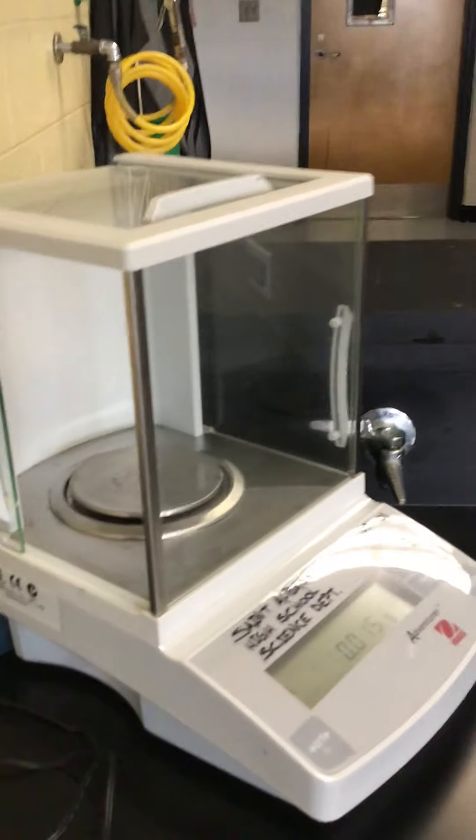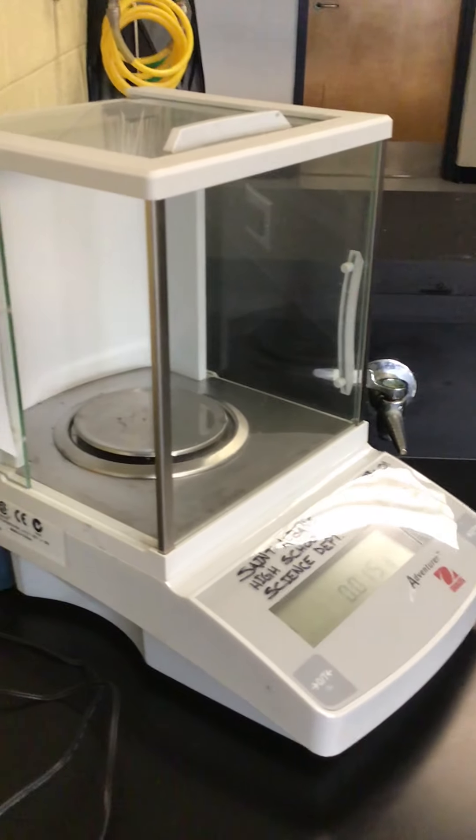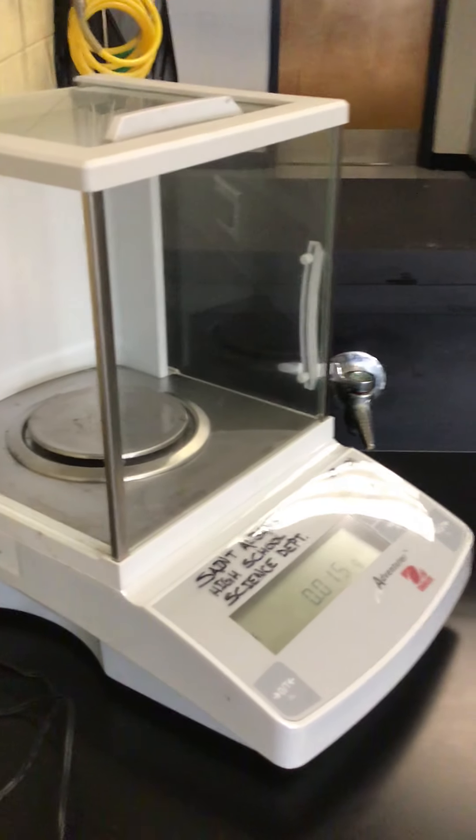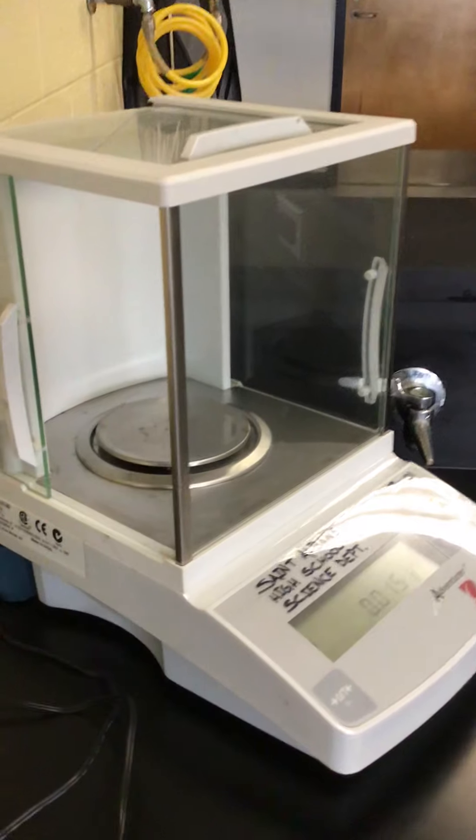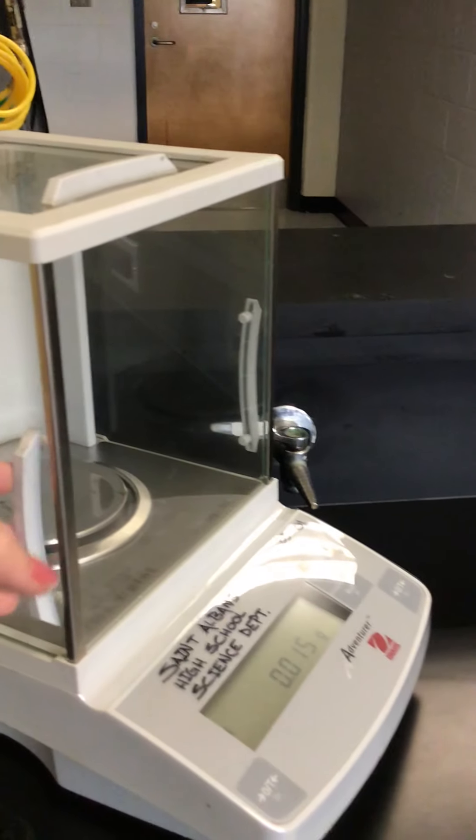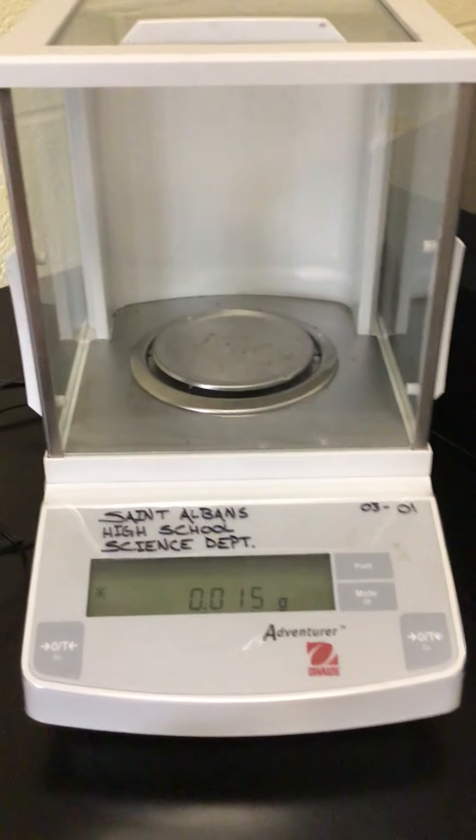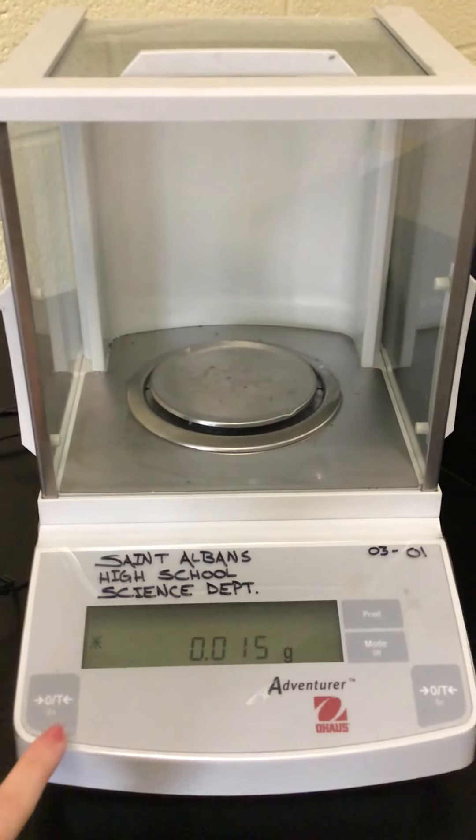Now if you zero your scale and try and take your measurement with any of these doors open it can affect the accuracy of the scale. So when you're zeroing it out and when you're actually measuring something you want to make sure all the doors are shut and then you just want to tare your scale.